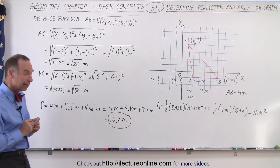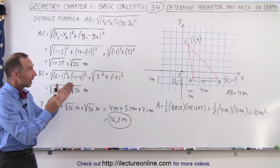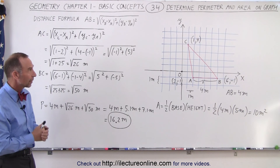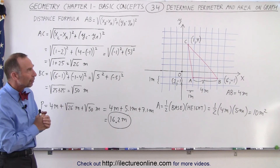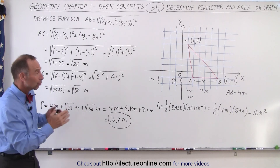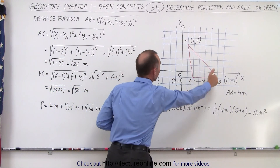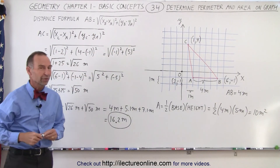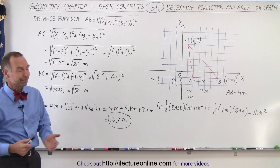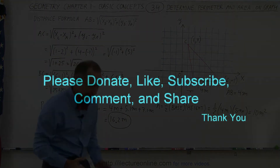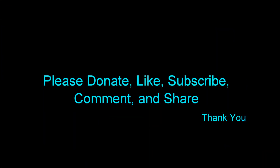And that's how it's done — finding the area and the perimeter of a triangle when we're not given the side lengths, and we have to use the distance formula to calculate those sides.